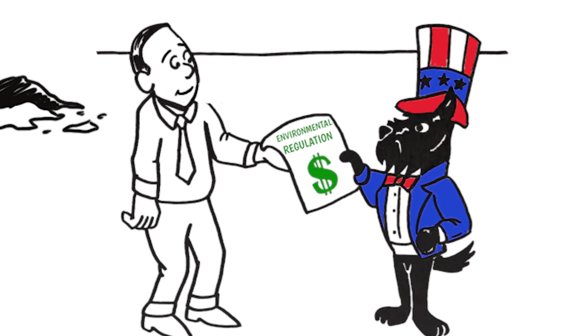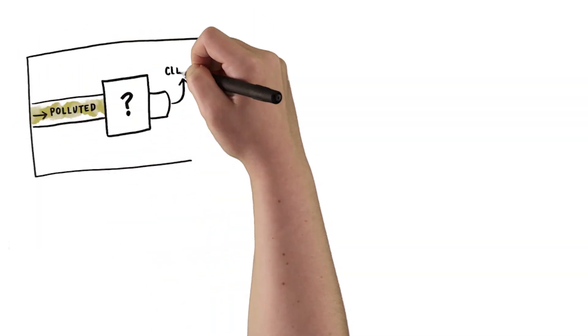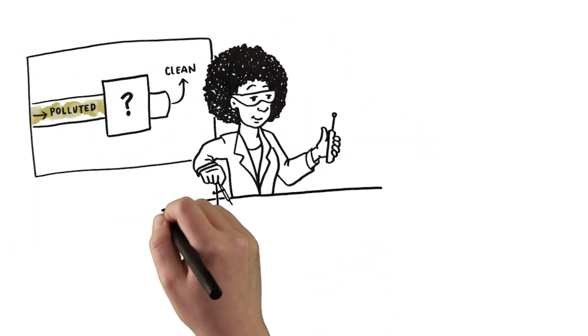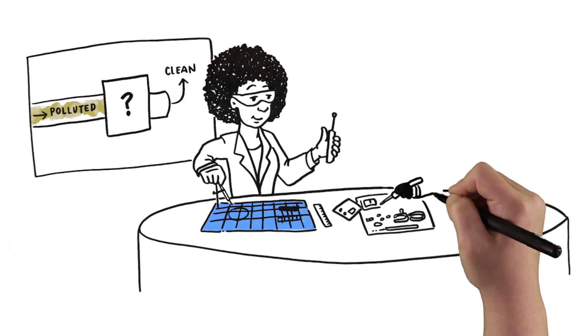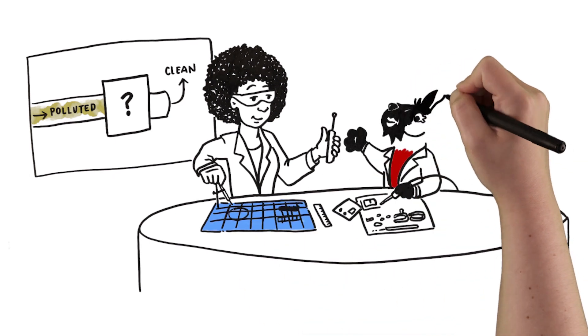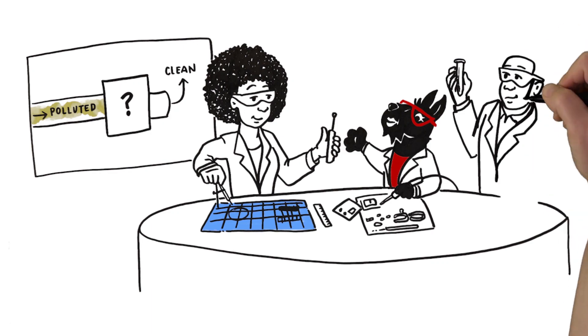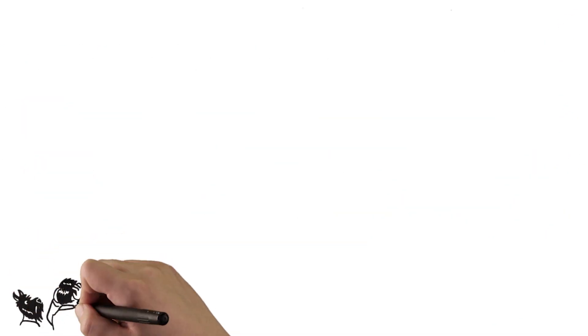Not necessarily. Sometimes businesses make inventions and develop new processes in order to comply with environmental regulation. In other words, they innovate. This innovation can cut the cost of compliance considerably. When this happens, it's a big benefit for society.